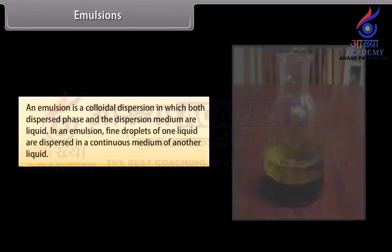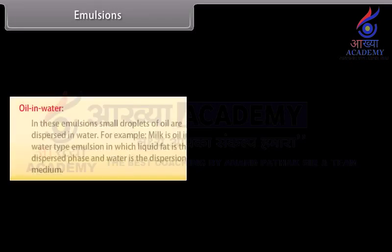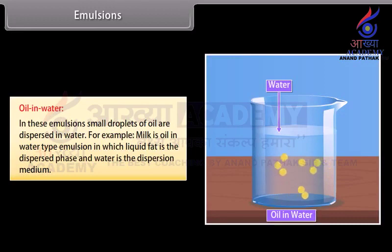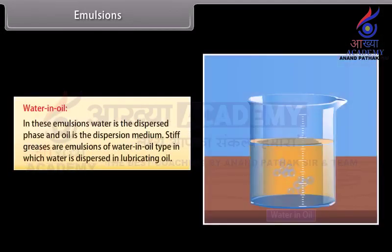Emulsions. An emulsion is a colloidal dispersion in which both dispersed phase and the dispersion medium are liquid; fine droplets of one liquid are dispersed in a continuous medium of another liquid. Emulsions are of two types: oil in water and water in oil. Oil in water: some droplets of oil are dispersed in water — for example, milk is an oil-in-water emulsion in which liquid fat is the dispersed phase and water is the dispersion medium. Water in oil: stiff greases are emulsions of water in oil type in which water is dispersed in lubricating oil — water is the dispersed phase and oil is the dispersion medium.